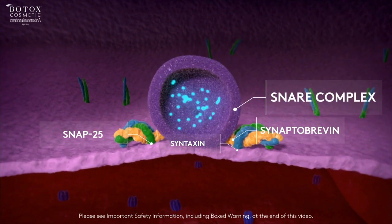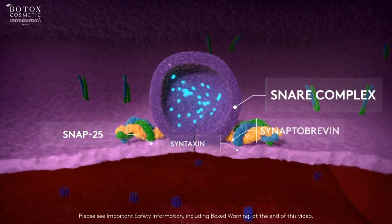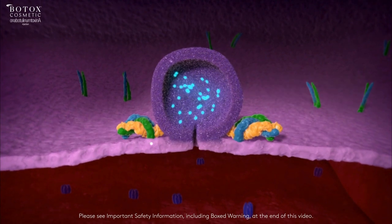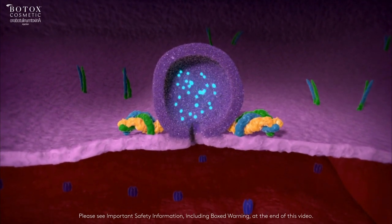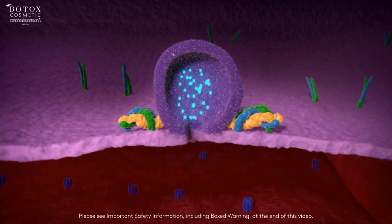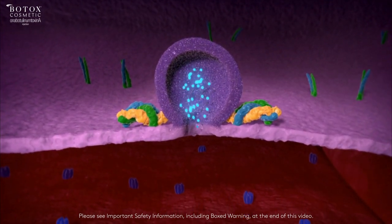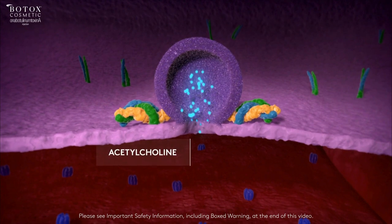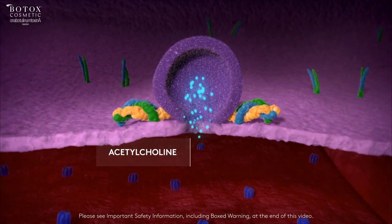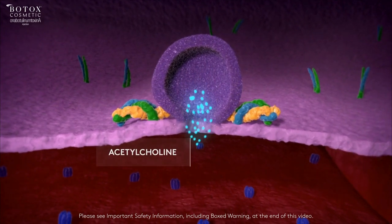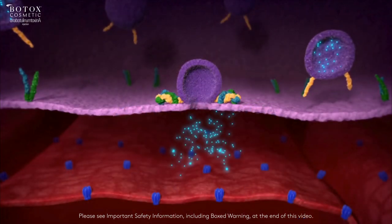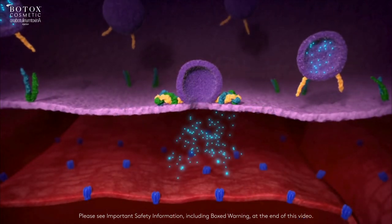Binding of the vesicle to the membrane triggers acetylcholine release, which results in muscular contraction. This is the normal function of muscular contraction prior to Botox Cosmetic injection.